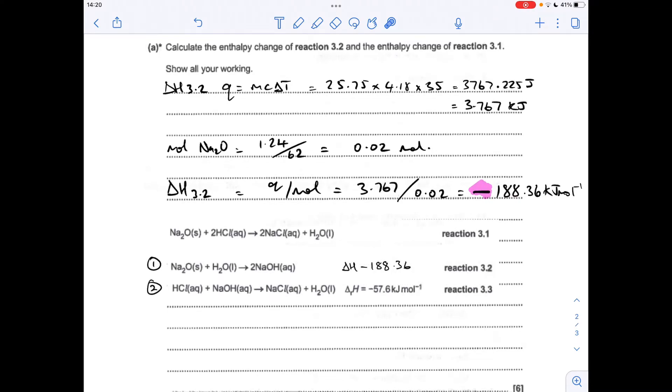So moving on to the final bit where I've got to calculate the enthalpy change for reaction 3.1 using the value we've just calculated for 3.2 and the supplied value for 3.3. Now, the way I'm going to do this is the way I was taught how to do these back in the 80s, so I'm not going to use a cycle. I'm going to basically create this equation from the two ones that we've been supplied and that we've got the enthalpy changes for.